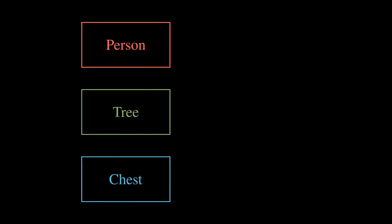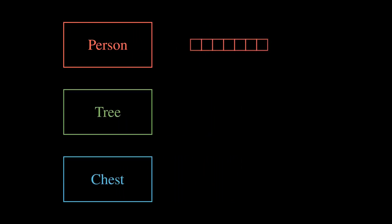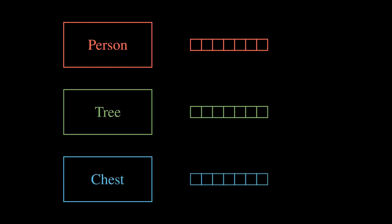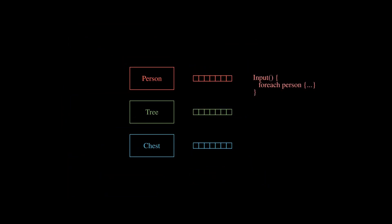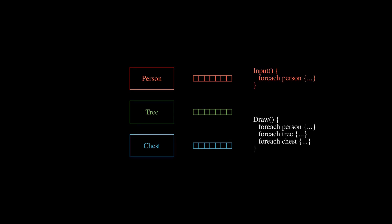All entities in a game are usually called game objects — everything from persons to trees to chests. We can hold each of these types in their own separate array, then when we want to do operations such as handlePlayerInput, we can loop over all of the persons. Likewise for drawing, since all of our game objects are drawable, we can loop over each type and draw it to the screen. The problem here is that we can't reuse data across our different types.